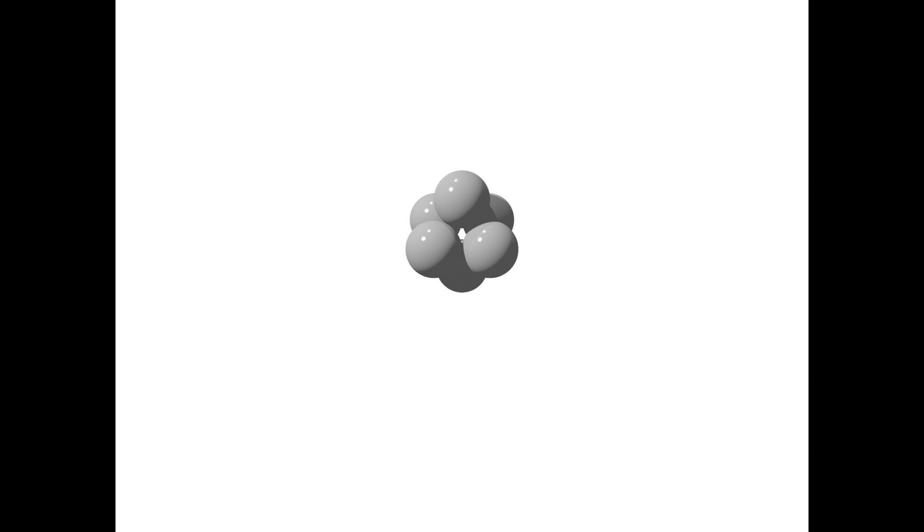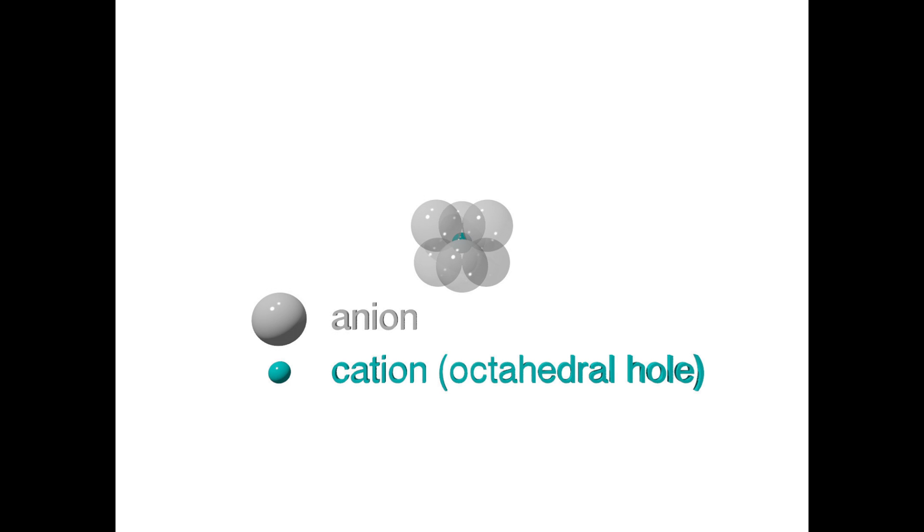The void created by these spheres is an octahedral hole. Let's occupy the hole with a cation. We can see that the octahedral hole is quite a bit larger than the tetrahedral hole.